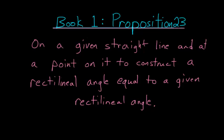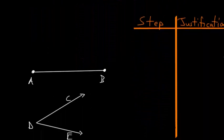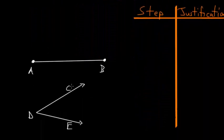Book 1, Proposition 23 of Euclid's Elements is a construction proof that focuses on duplicating a given angle. On a given straight line and at a point on it, to construct a rectilineal angle equal to a given rectilineal angle. The word rectilineal references that this angle is composed of straight lines.